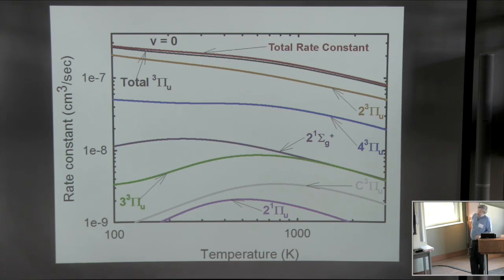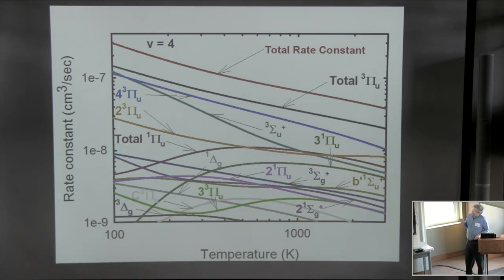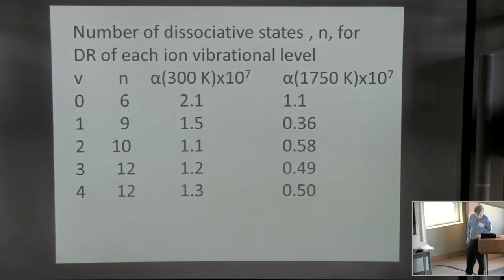So hopefully soon we'll have a higher resolution experiment on N2+. Now this is a total rate constant for v=0 shown in red and all the contributing states. And all I want to mention here is that there are six contributing states, each of which has a rate constant above 1 times 10^-9, contributing to the dissociative recombination from v=0. This is v=4. And you can see that we have many more states contributing to that rate coefficient, having contributions above 1 times 10^-9. In fact, there are 12 states here contributing to the cross section.